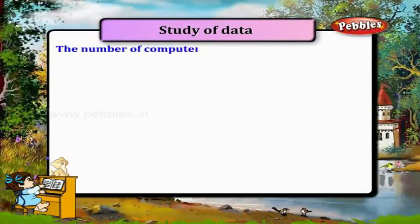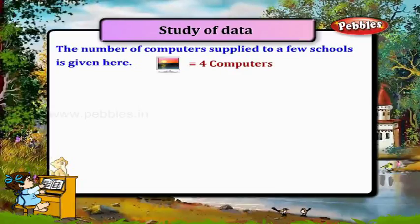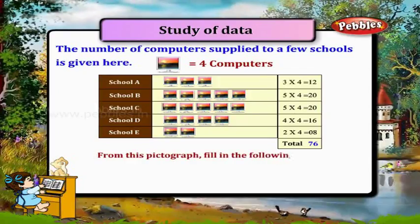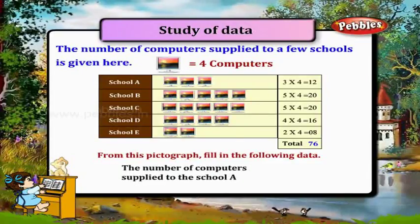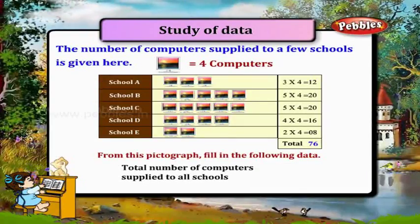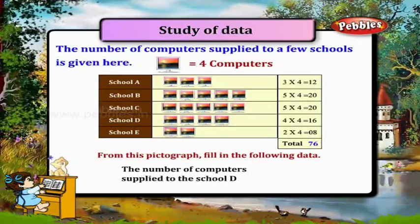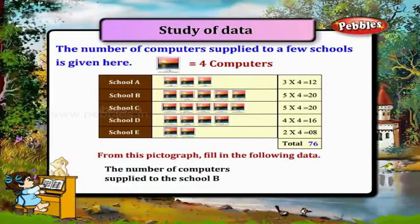The number of computers supplied to a few schools is given here. One computer picture is equal to 4 computers. From this pictograph, fill in the following data. The number of computers supplied to School A: 12. Total number of computers supplied to all schools: 76. School D: 16. School B: 20.